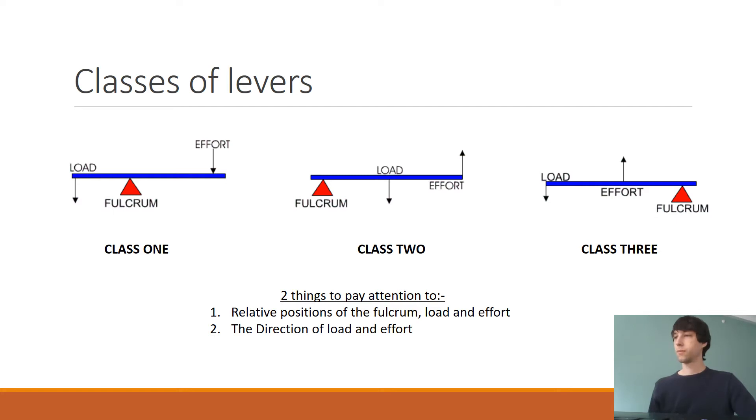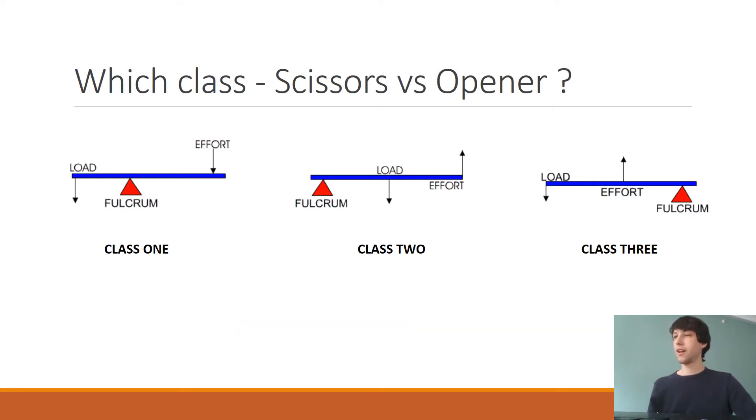Now, based on this, do you think you can classify scissors and our can opener into one of these classes? I think the scissors are class one because the fulcrum is in the center, and the opener would be class two since it's on the side. That's actually correct. Good job, Zach.